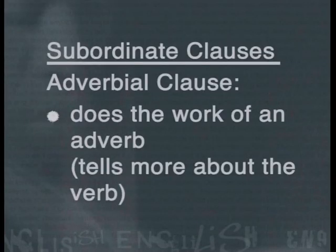So far we've seen that the adjectival clause describes the noun in the main clause. But what describes the verb in the main clause? For that, we need to move on and look at the next type of subordinate clause: adverbial clauses. These do the work of an adverb, and they tell us more about the verb in the main clause. There are eight different types of adverbial clause. I suggest that you write them down as we go through them, so that you'll have a list that you can refer to in the future.